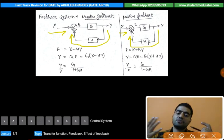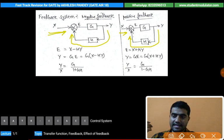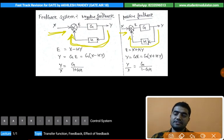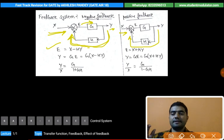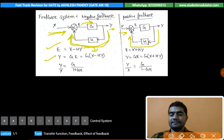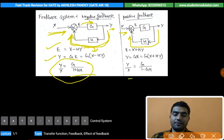We now derive the overall transfer function for a negative feedback system. For negative feedback, X is positive and H·Y is negative, so the summing node gives E = X − H·Y. Then Y = G·E. Substituting and solving, we derive the formula: the overall transfer function equals G/(1 + GH). Similarly, for positive feedback, the formula is G/(1 − GH).